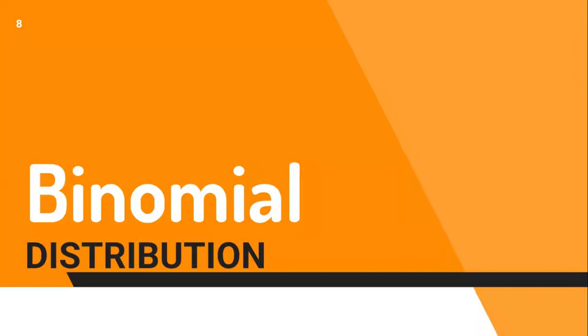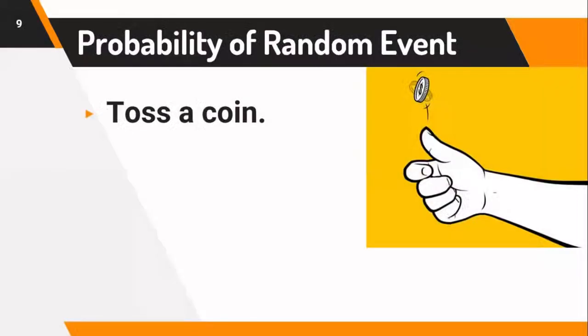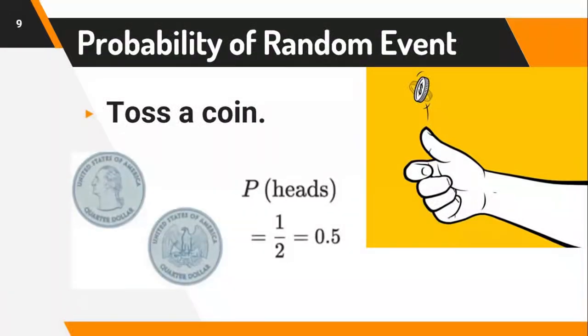There are a number of distributions we are going to look at, including the binomial distribution, the normal distribution, the Poisson distribution, and the geometric distribution. In terms of the binomial distribution, 'bi' means two. We use the tossing of a coin for simulation. Whenever we toss a coin, the probability that heads will appear is one out of two possible outcomes — heads and tails — which is 0.5, or a 50% probability.